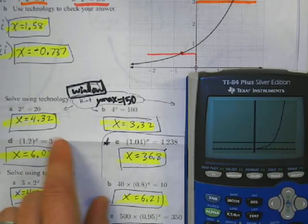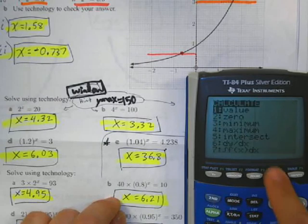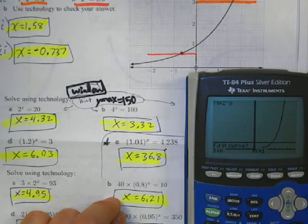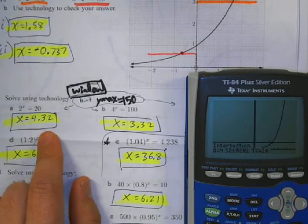So, then, now I can do my same steps, second trace, 5 for intersect, arrow close to it, enter, enter, enter, enter, and there's my answer at 4.32.